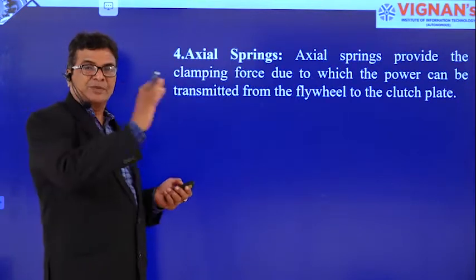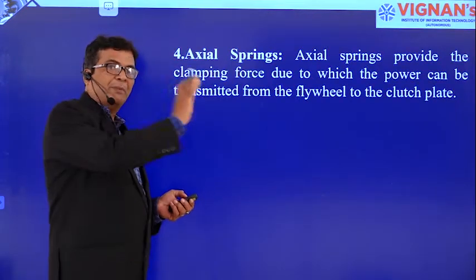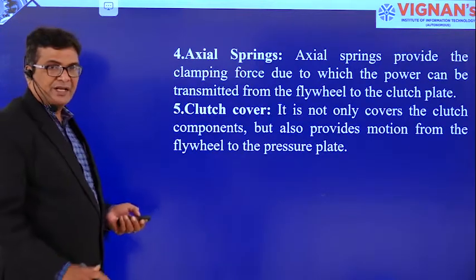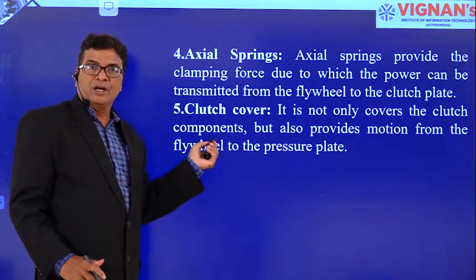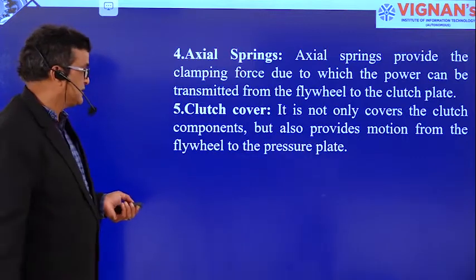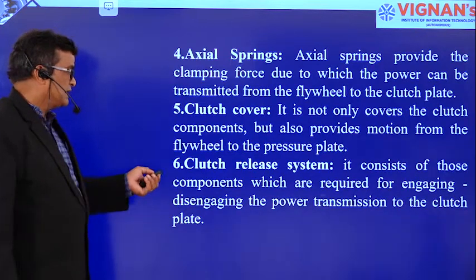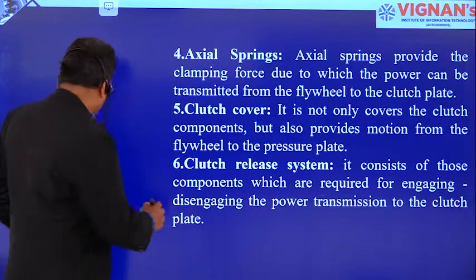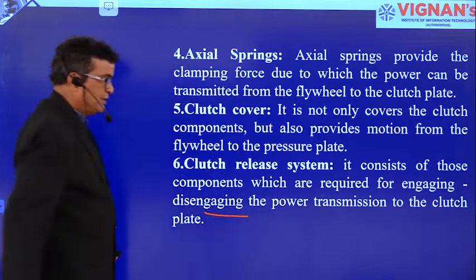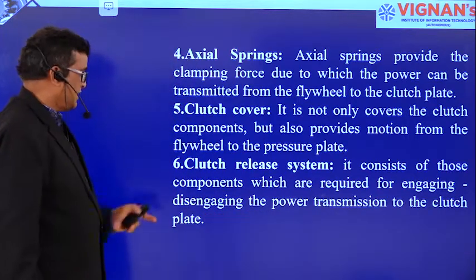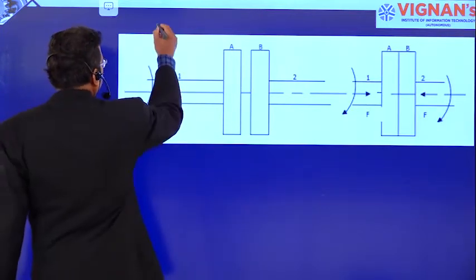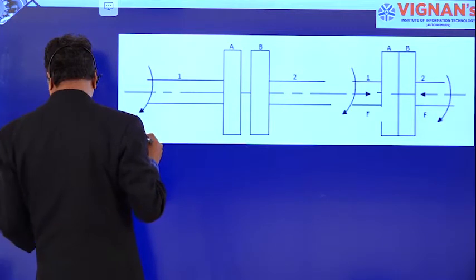Axial springs are springs used to apply the pressure plate onto the clutch plate. The clutch cover is a closure that encloses the flywheel, pressure plate, clutch plate, and all the springs inside. The clutch release system is an operating mechanism used to engage or disengage the power to the rear axle. This is the operating principle, or the principle of operation, of the clutch.